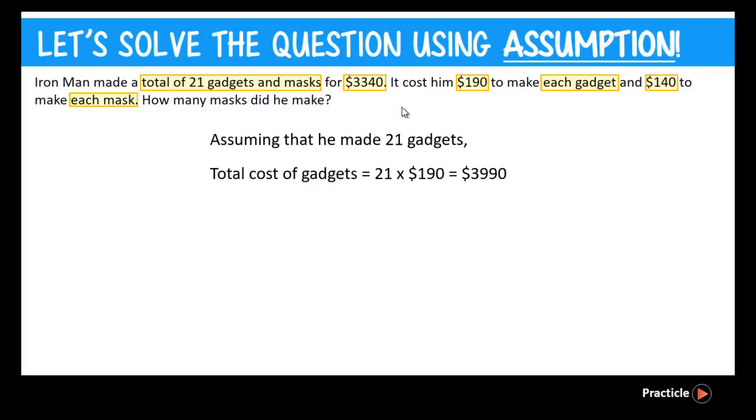So the next step, what we need to do is to find the difference between our assumption and the actual value that he spent. We do that by taking $3,990 minus $3,340. This will give us a value of $650. All right, so now that we have $650, we have to think of where it comes from. This extra value comes from either the gadget or the mask.